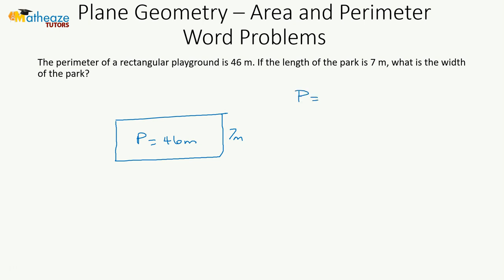The perimeter of a rectangle is 2 multiplied by length plus width. Let's substitute in: 46 meters is 2 multiplied by 7 plus width. We divide both sides by 2 to get rid of the multiplier, so we have 23 meters equals 7 meters plus w meters.